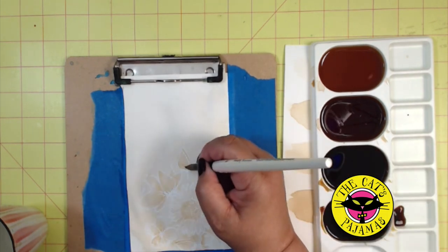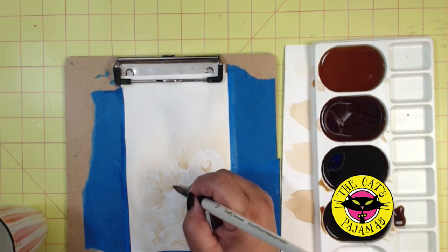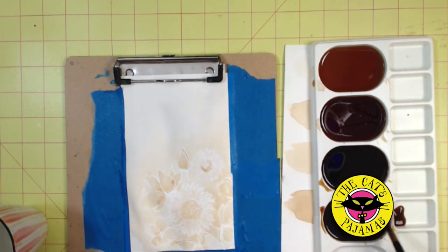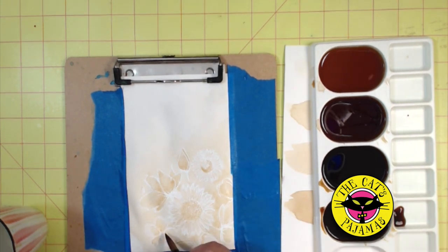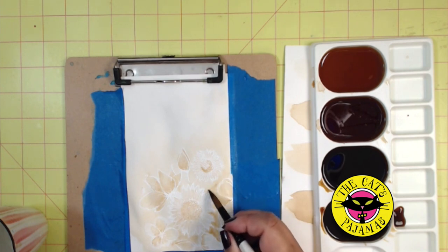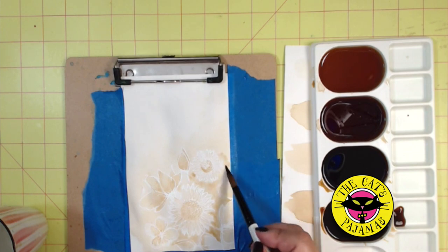Now if the coffee dries in a hard line and you want it smooth, use a wet brush to smooth out the coffee and just blend it out to avoid getting that hard line. And I think this looks good. I'll let it dry.